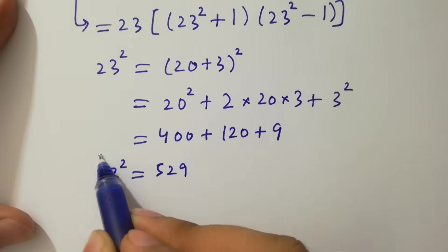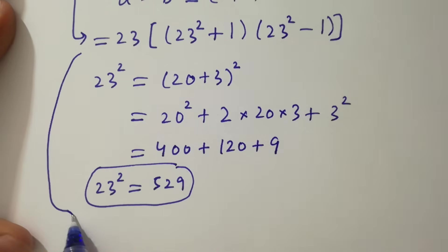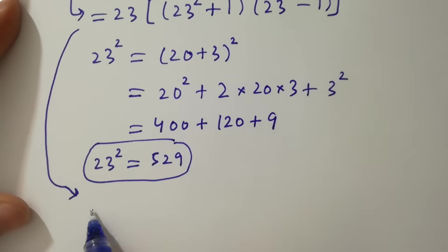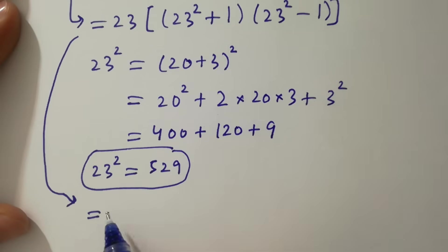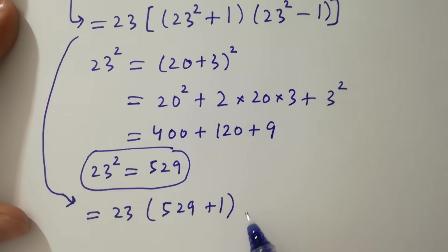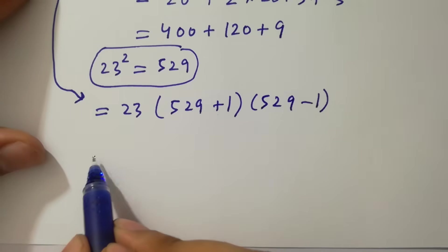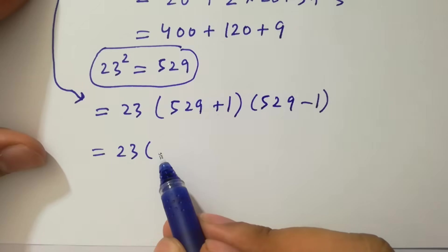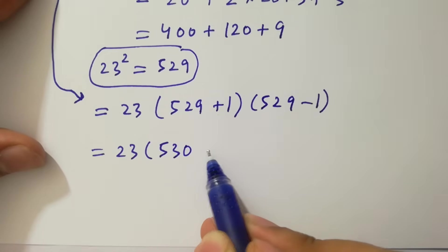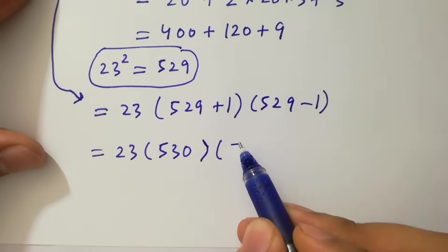23 squared equals 529. Then we have 23 times (529 plus 1)(529 minus 1), which gives 23 times 530 times 528.